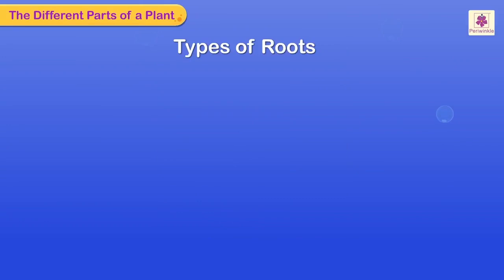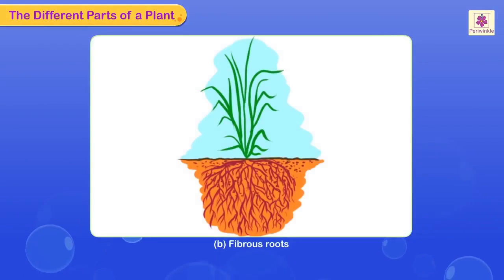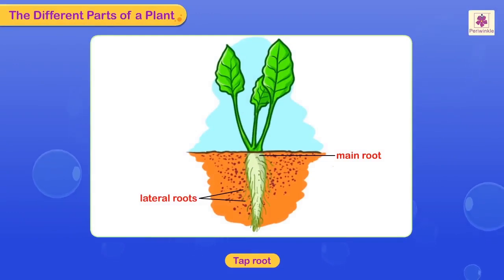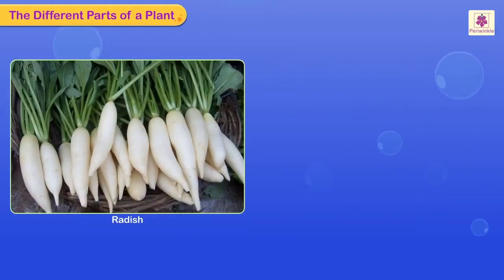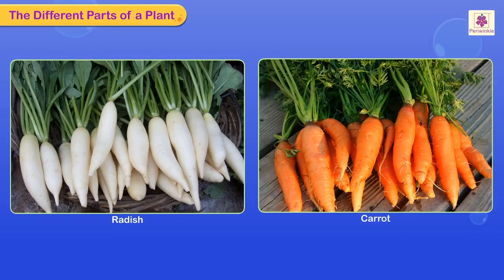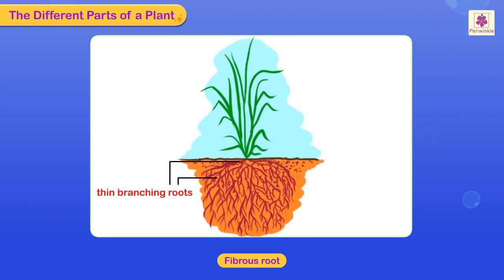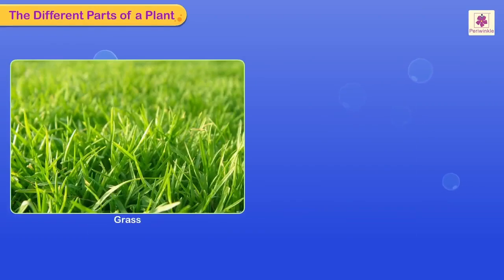Types of roots: A) tap roots, B) fibrous roots. Tap roots have a main or central root from which smaller, thinner roots arise laterally. Most trees and vegetables like radish and carrot have tap roots. Fibrous roots have thin branching roots arising from the base of the stem. Most grasses and ferns have fibrous roots.